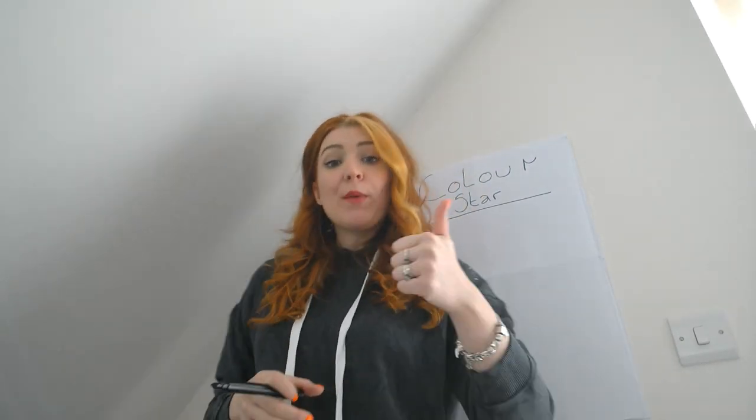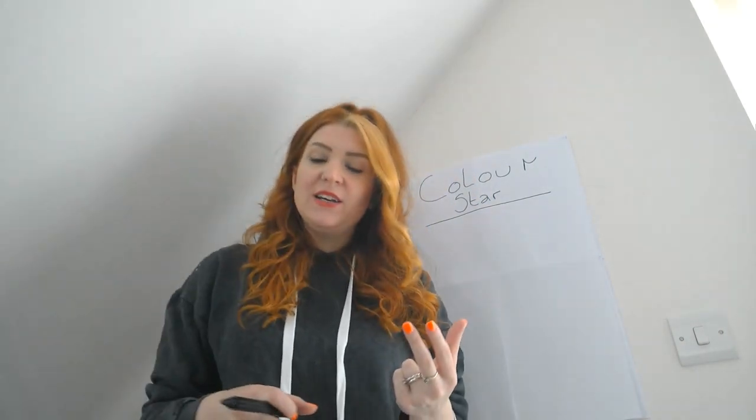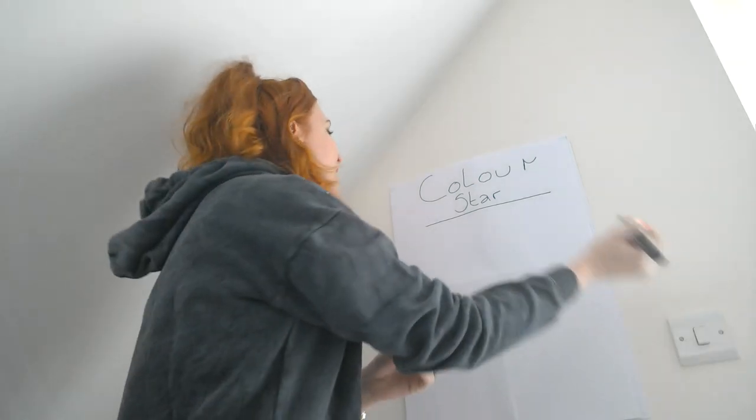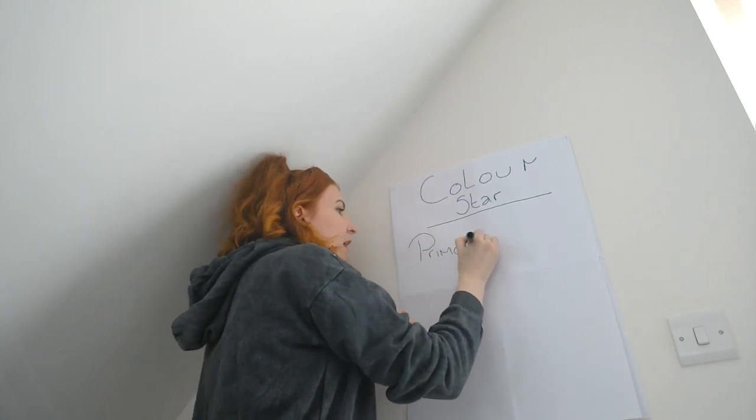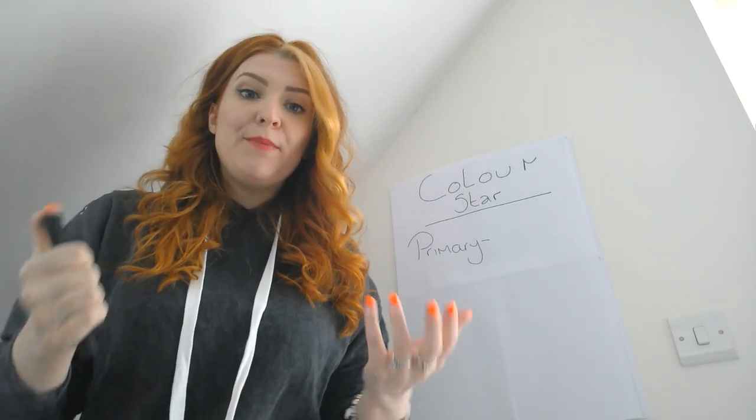We have three different types of colours in our colour star. We have something we call primary colours, something we call secondary colours, and something we call tertiary colours. The first things we're going to look at are our primary colours. These three primary colours are the main parts that build up the colour star — everything works from these primary colours. So let's put down 'primary'.